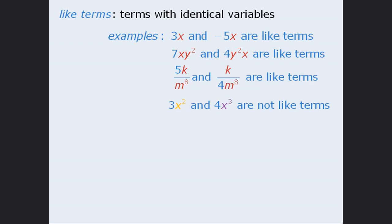Conversely, 3x squared and 4x cubed are not like terms since the variable in the first term is x squared and the variable portion of the second term is x cubed.